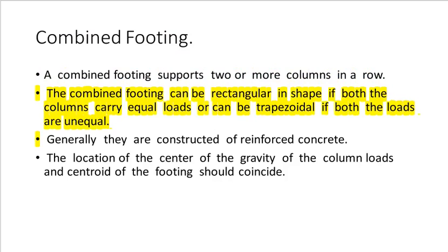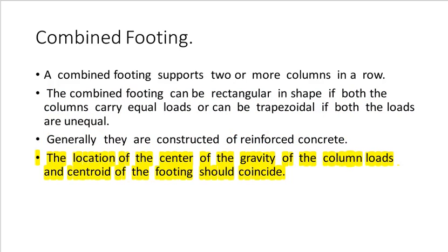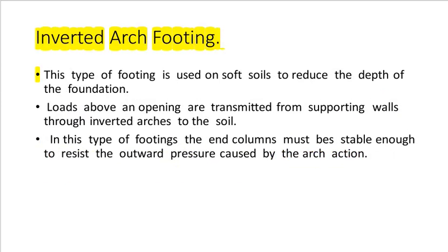A combined footing supports two or more columns in a row. It can be rectangular in shape if both columns carry equal loads, or trapezoidal if the loads are unequal. Generally they are constructed of reinforced concrete. The location of the center of gravity of the column loads and the centroid of the footing should coincide.